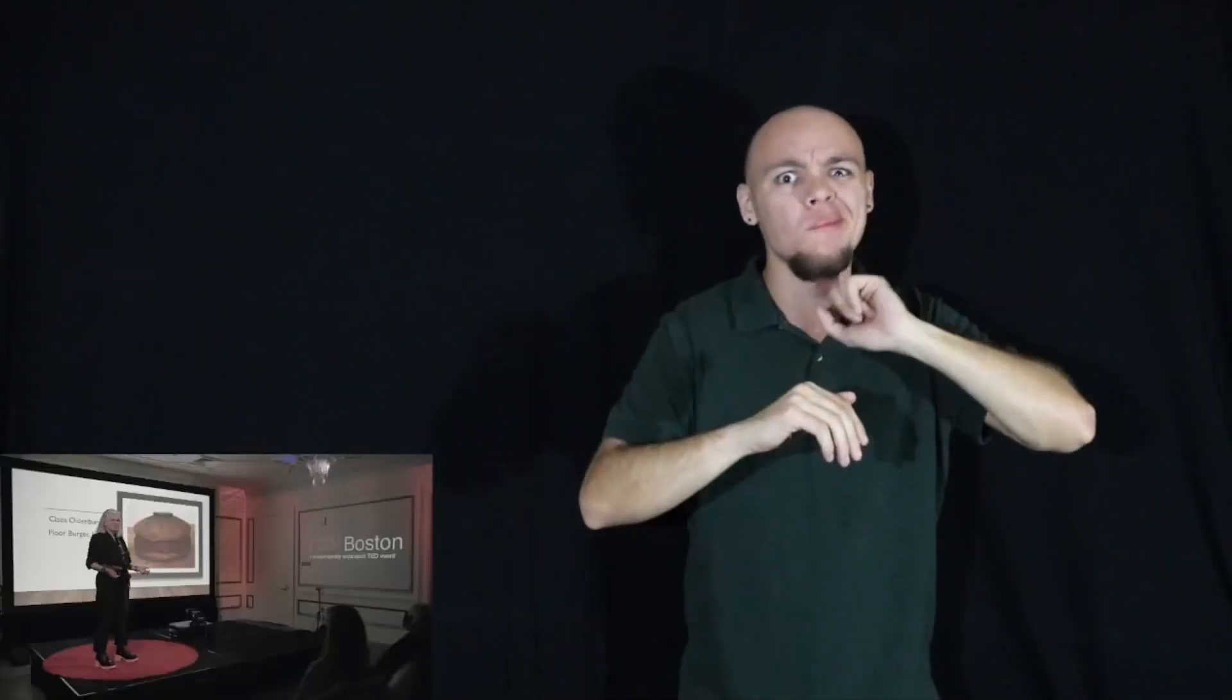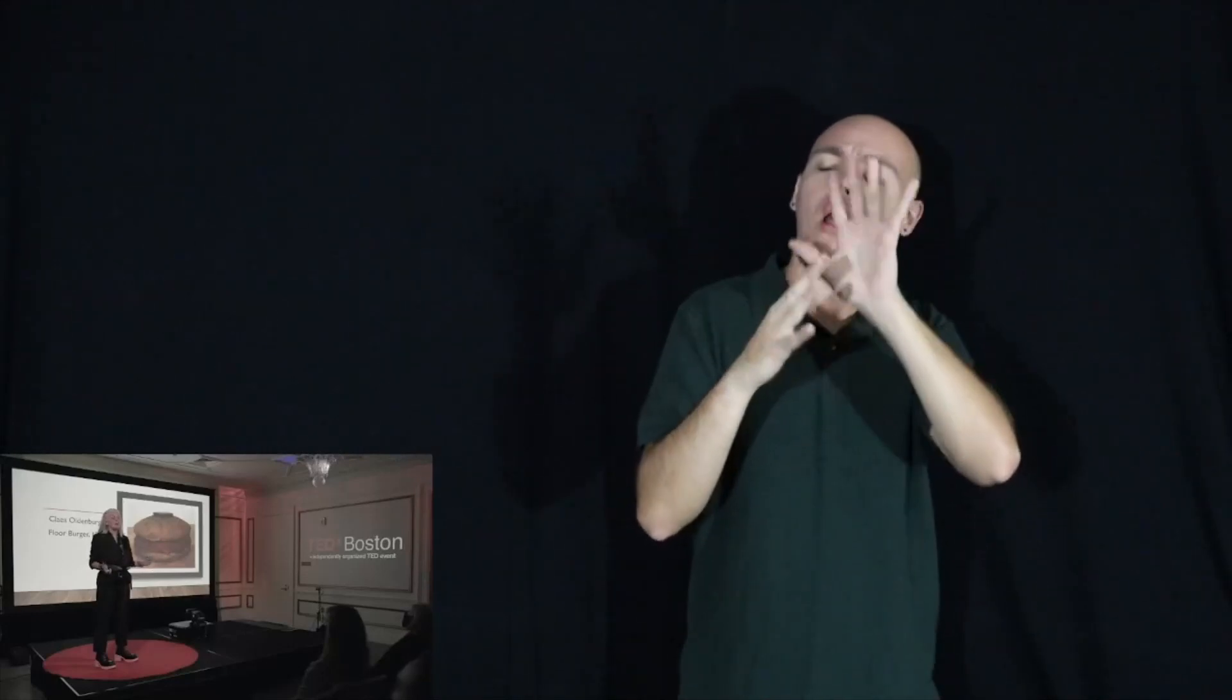I walked into a large museum and in front of me I saw this. Klaus Oldenburg's Floor Burger from 1962. It was vast. I had never seen anything like it. It was called a sculpture. What is a sculpture? Sculptures are supposed to be these big things made of metal. I looked at it. I was completely confused and transfixed.